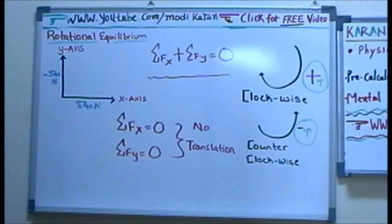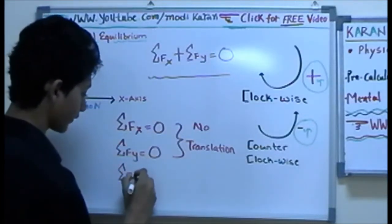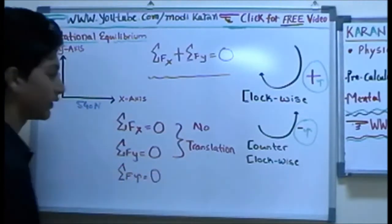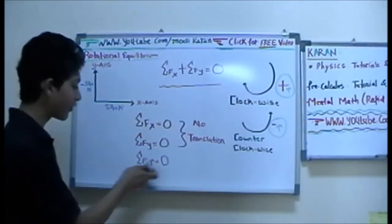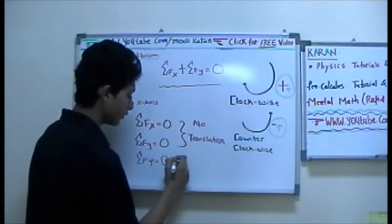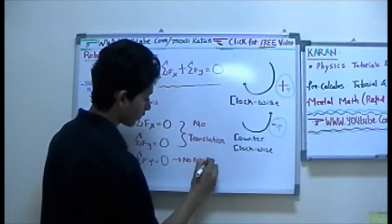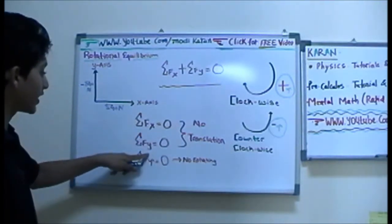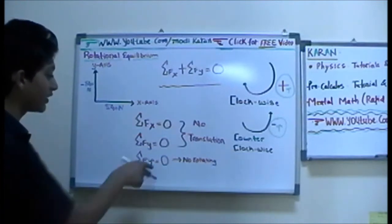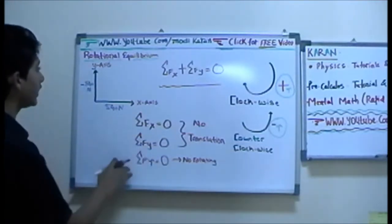Now here comes the thing that most people get shocked by. Torque is 0 as well. Torque basically tells us that the object is not moving since the net force of the torque is 0. This basically tells us it's not rotating. So when you have net force in the X and Y directions equal to 0, the object is not moving. And when the net torque is 0, it's not rotating as well.